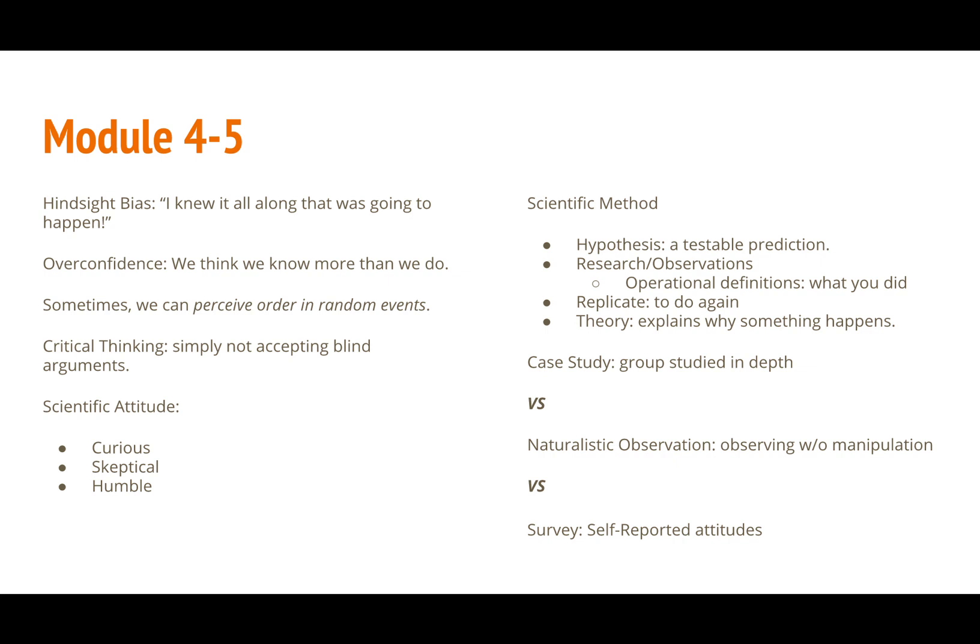One bias that is similar to this is the overconfidence bias where we think we know more about a subject than we actually do. One of the strongest traits that a man possesses is the ability to recognize patterns quickly and efficiently. However this makes us more prone to seeing patterns in random events.